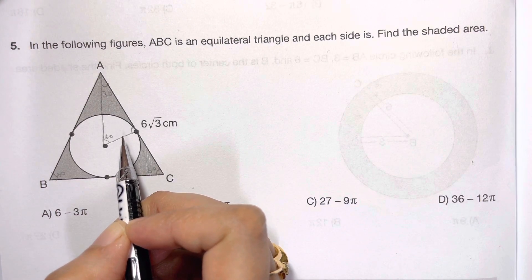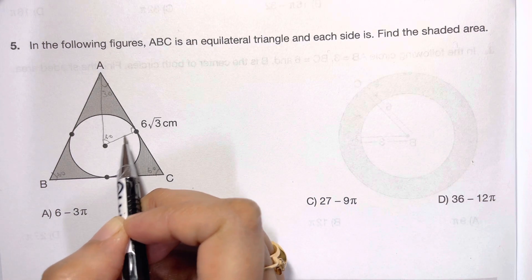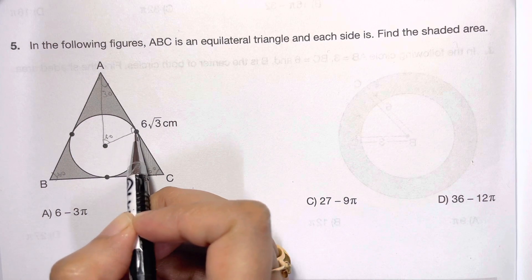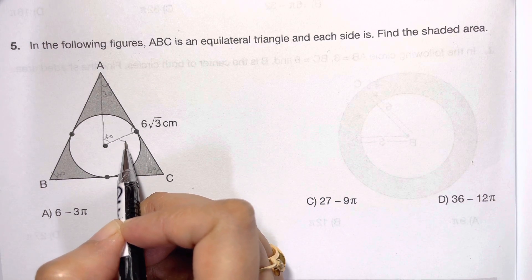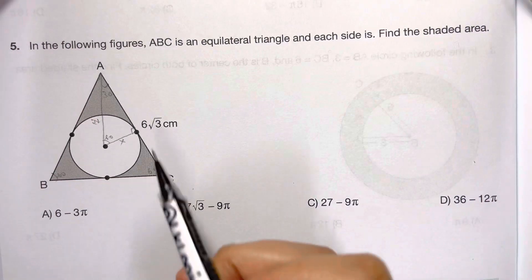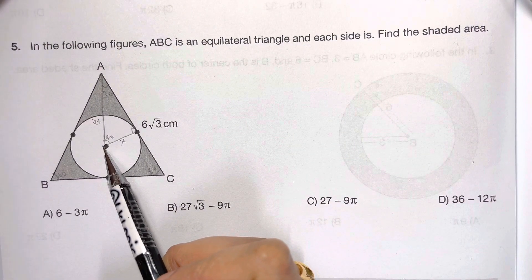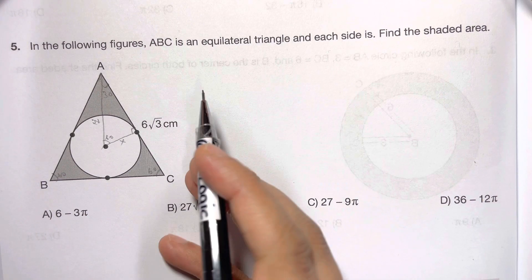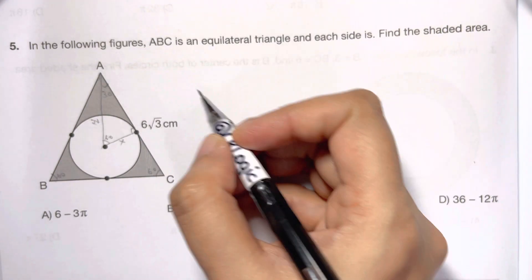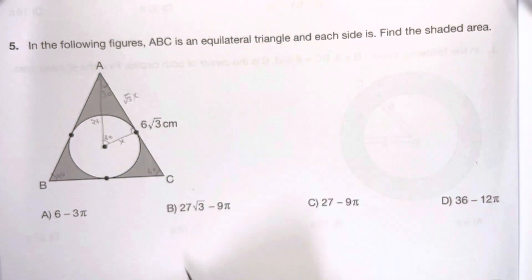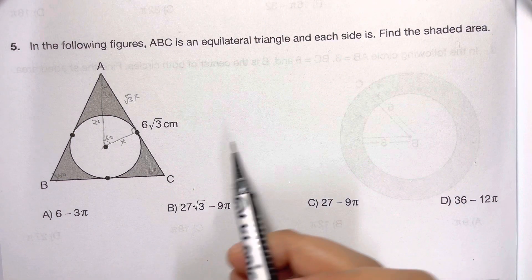So we have a 30-60-90 triangle. Whenever you have a 30-60-90, it's a special triangle. The shorter leg is x, which is the radius. Let it be x, and the hypotenuse is twice x, and the longer side is √3 times x.